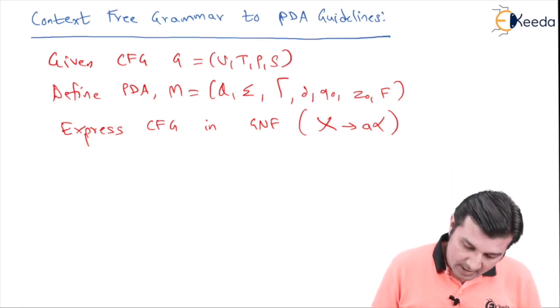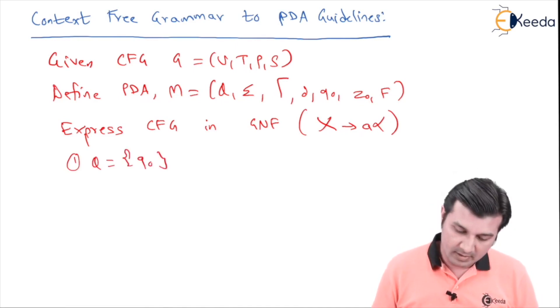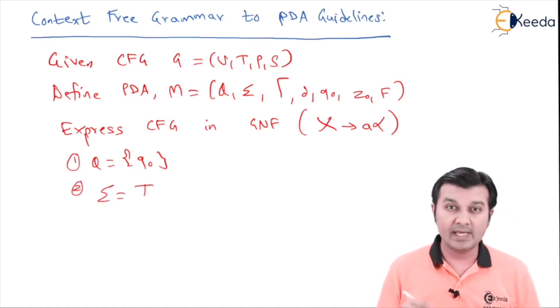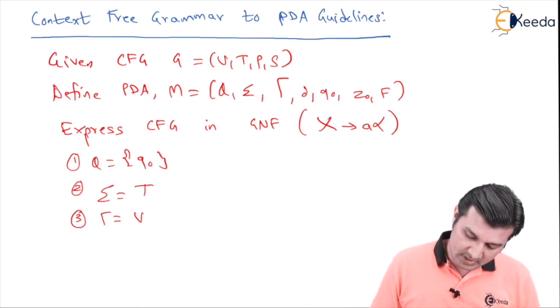The next is I see over here my Q is going to be my q0 always, then my next thing summation is going to be the T in the context free grammar, third one my Gamma is going to be equal to my set of variables which I call by V dash.